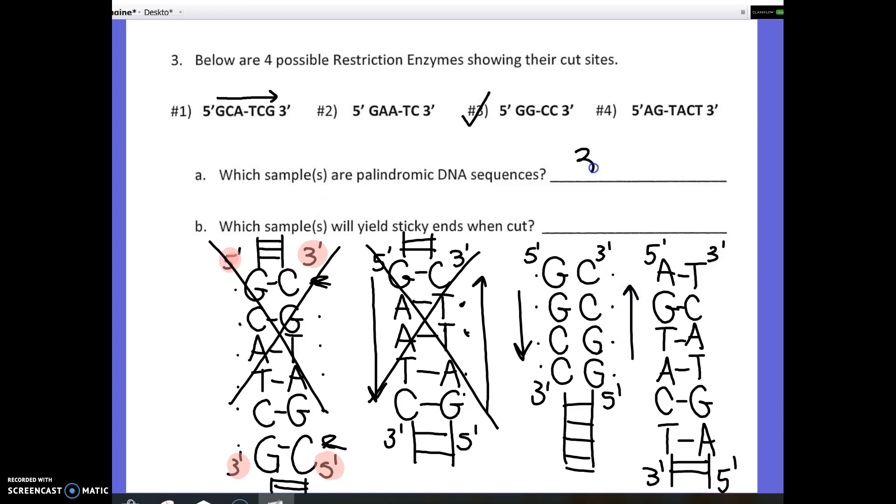Right? So, this is palindromic. So, three is palindromic. And, AGTACT, AGTACT. Four is also palindromic. So, three and four. Again, you're looking for the code to be exactly the same. Now, why does the code have to be exactly the same? The code has to be exactly the same because if it's not, the enzyme is not going to recognize it. In other words, if I look at number three here, my enzyme is looking for GGCC.